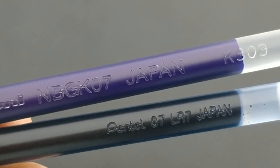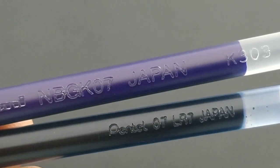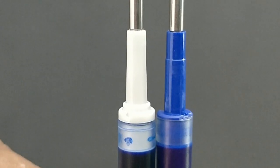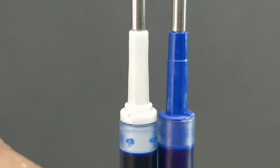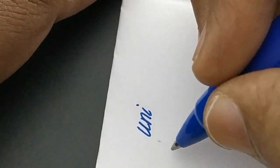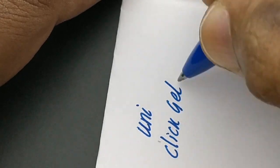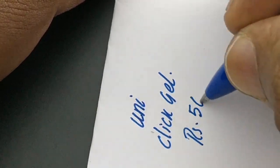The refills are similar in size, both from Japan. UniVall comes with a rubberized grip but Pentel Energel comes with a plastic but steady grip.